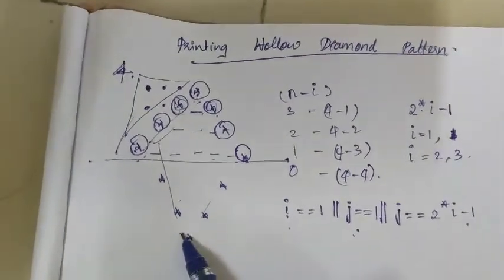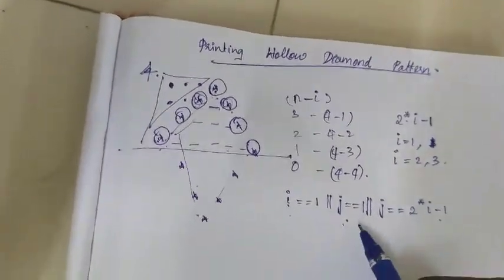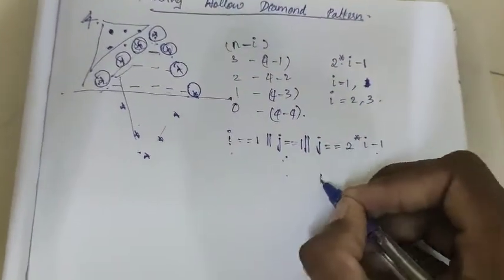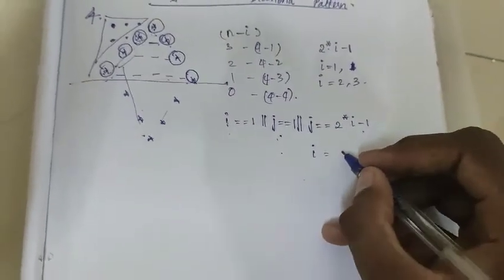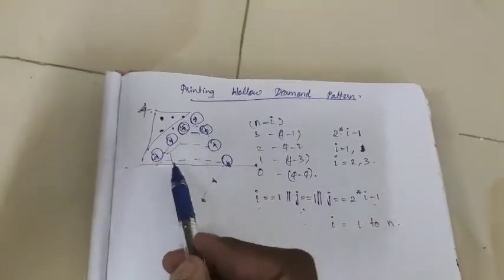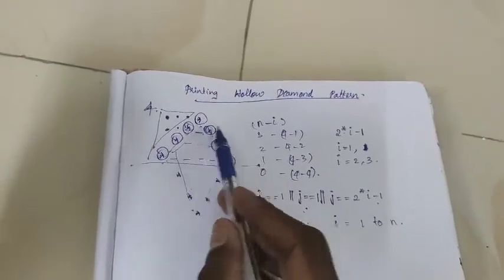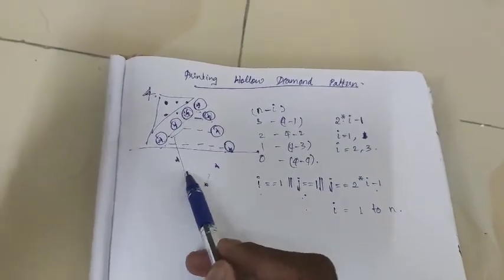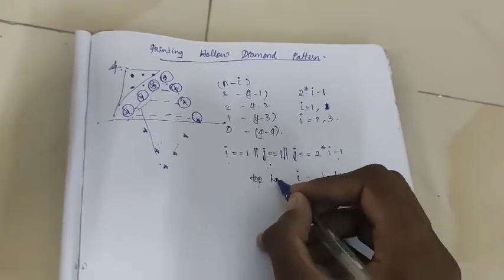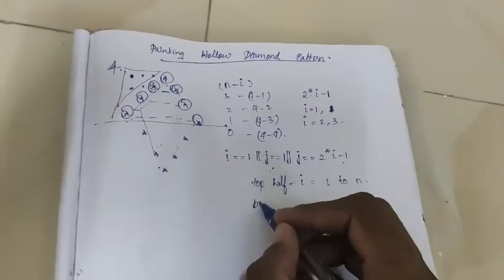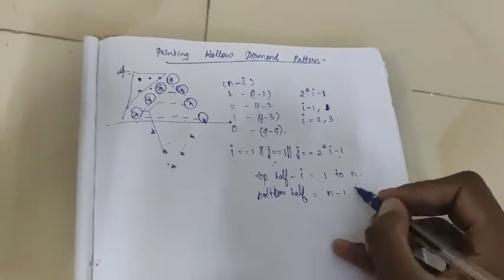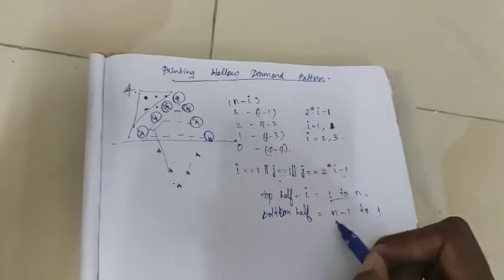Then how to print the bottom stars — it is very simple. Just reverse the logic from n minus 1 to 1. So in the first logic we apply the outer loop from i equal to 1 to n. In the top half I am having 4 rows, but in the bottom half I am having 3 rows alone, that is n minus 1 rows. So the top half is 1 to n, and the bottom half is n minus 1 to 1. That is top half is ascending and bottom half is descending.